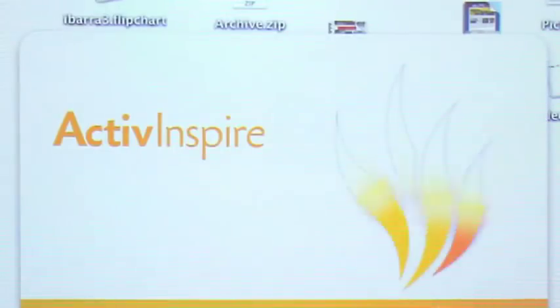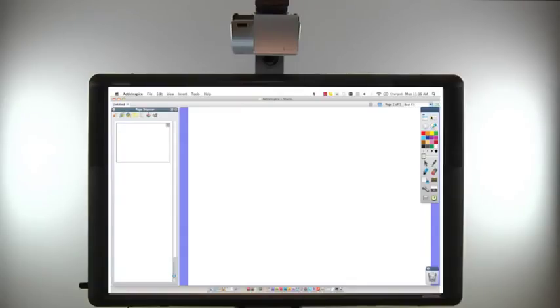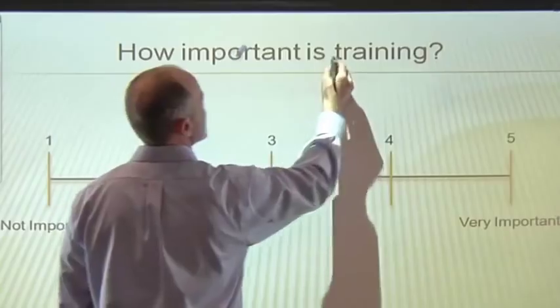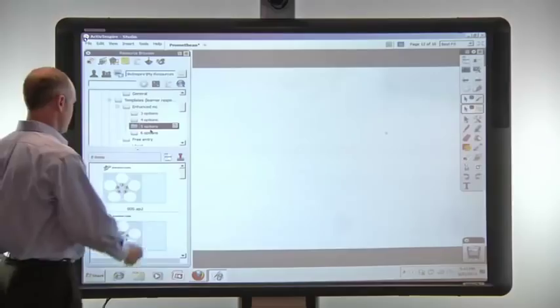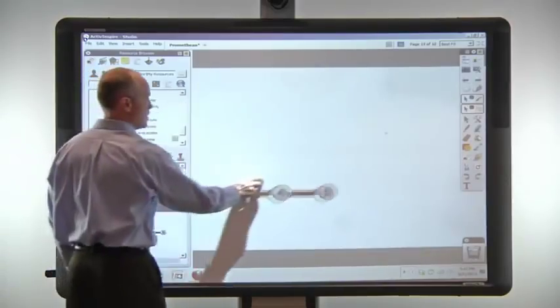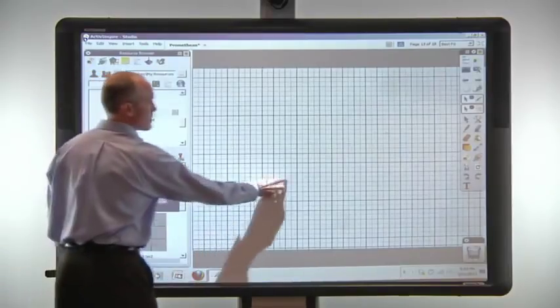ActiveBoard 500 includes Promethean's award-winning ActiveInspire Professional Edition software. ActiveInspire's interface options offer easy access to a range of built-in tools as well as templates to expedite the process of creating visually engaging content.